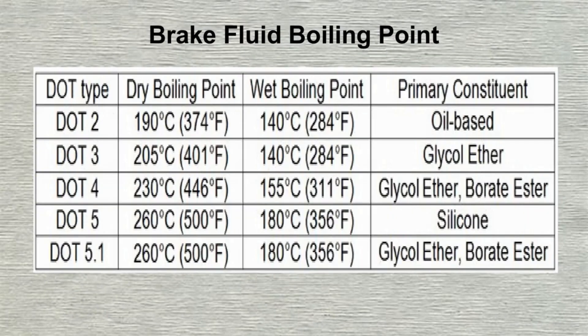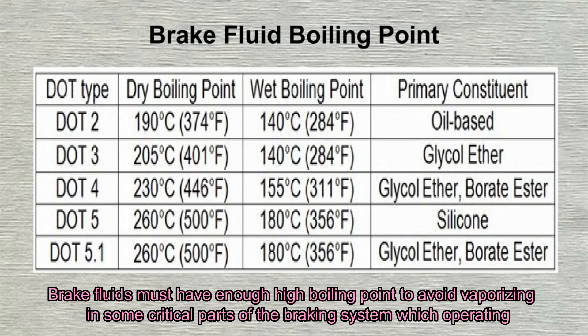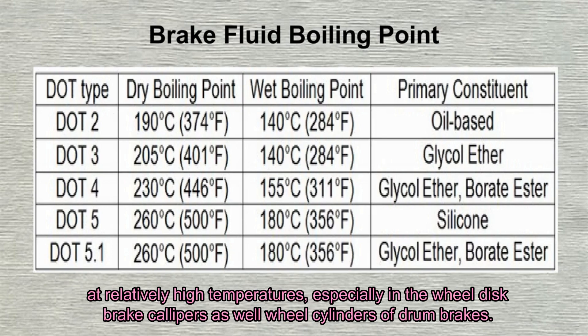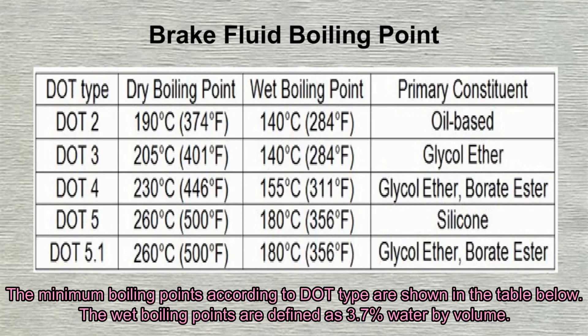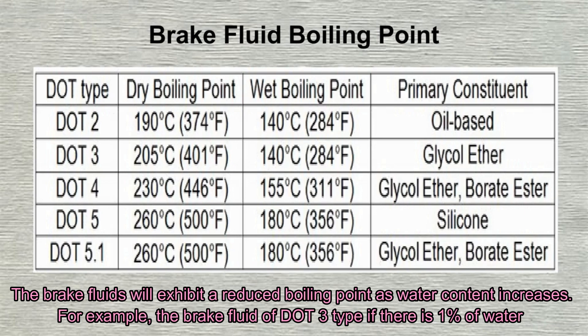Brake fluids must have a high enough boiling point to avoid vaporizing in critical parts of the braking system which operate at relatively high temperatures, especially in the wheel disc brake calipers as well as the wheel cylinders of drum brakes. The minimum boiling points according to DOT type are shown in the table. The wet boiling points are defined at 3.7% water by volume.